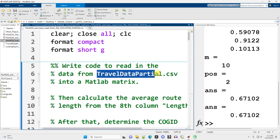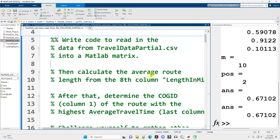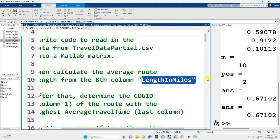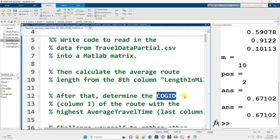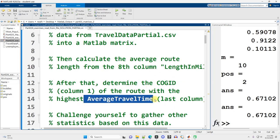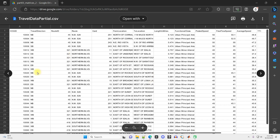All right, so we've got this file travel data partial dot csv, and we want to read it into MATLAB as a matrix. And then we want to calculate the average route length from the eighth column labeled length in miles. And after that, we want to determine the cog id of the route with the highest average travel time, which is the last column. Now, let's take a look at the data briefly before I go into the code here, which is always a good thing to do. I don't actually have Microsoft Office on my computer, so it's just a csv file, though. So I'm just looking at it through Google. Link to the exercise and also this file to read in are available in the video description.